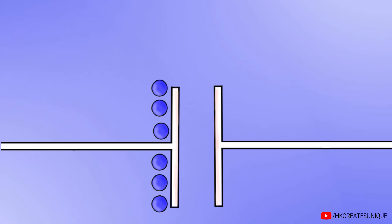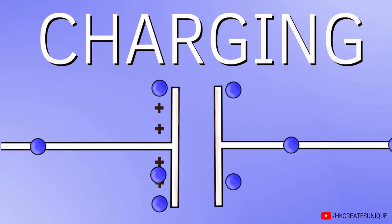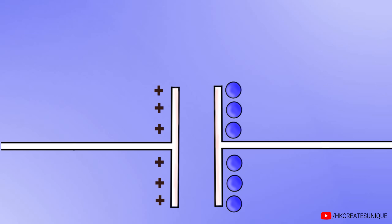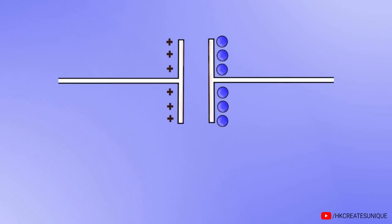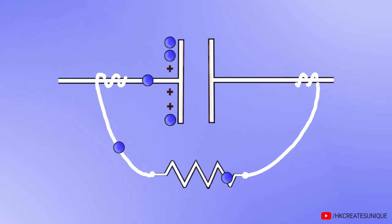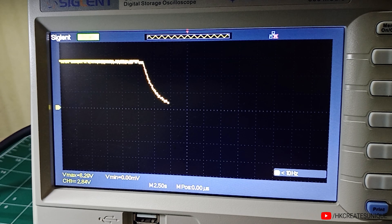The process of storing charge in a capacitor is called charging. The charges remain in the capacitor indefinitely and the voltage remains constant. To discharge a capacitor, connect a resistor in parallel with it. The electrons find an easy path to flow and the voltage goes down from the fully charged voltage to 0 volts.